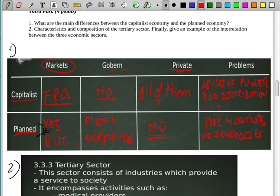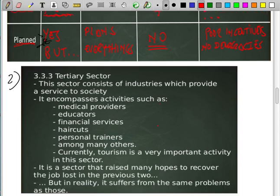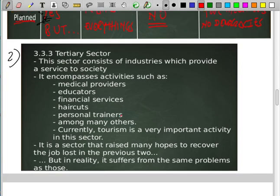There are situations in that several words or human rights are limited. The second answer is about the tertiary sector. It consists of industries which provide a service to people in accounting, for example medical, education, financial service. It's very important in this sector, tourism is a very important activity. The sector does recover the job losses in previous two, but really it suffers from the same problems.